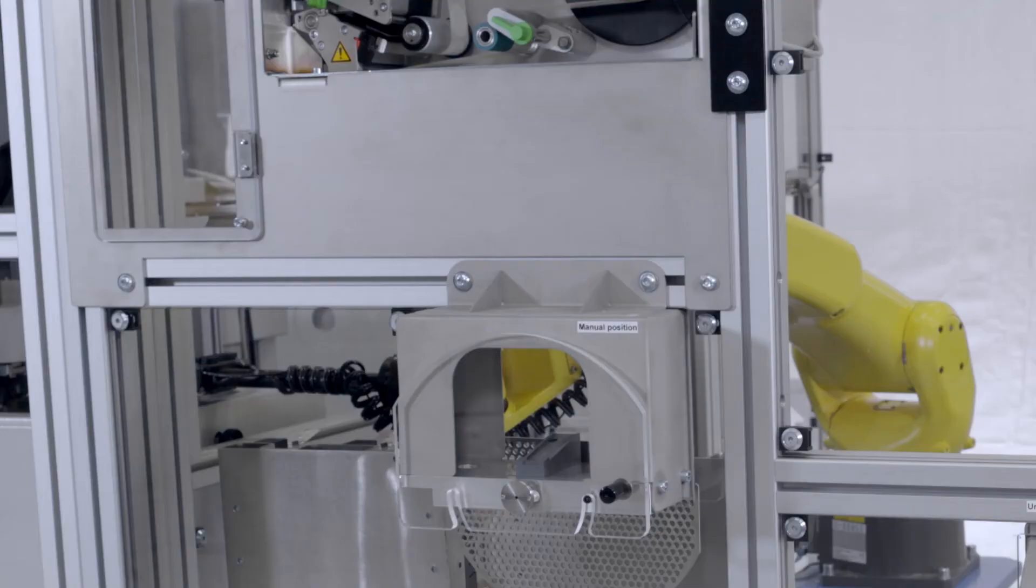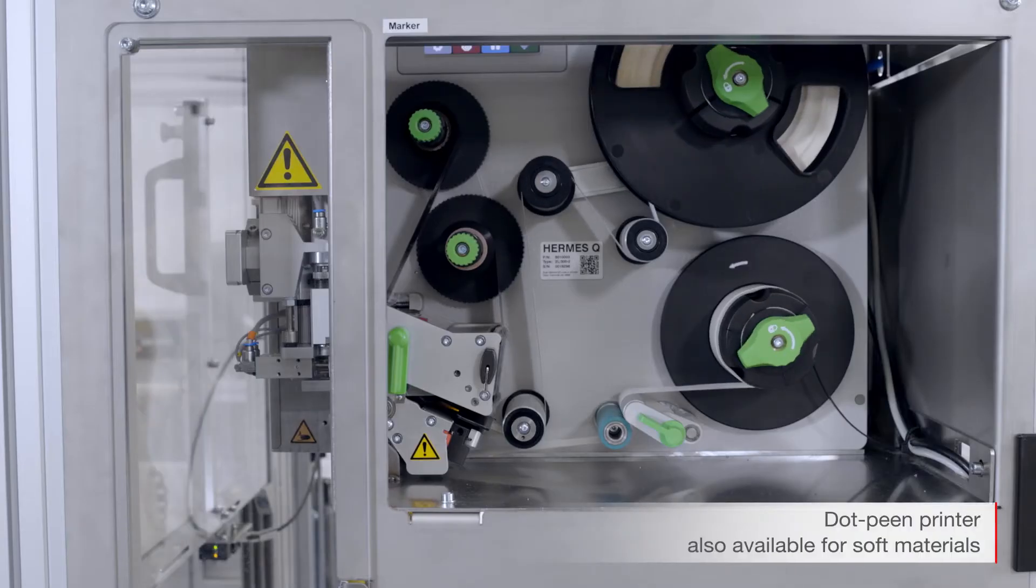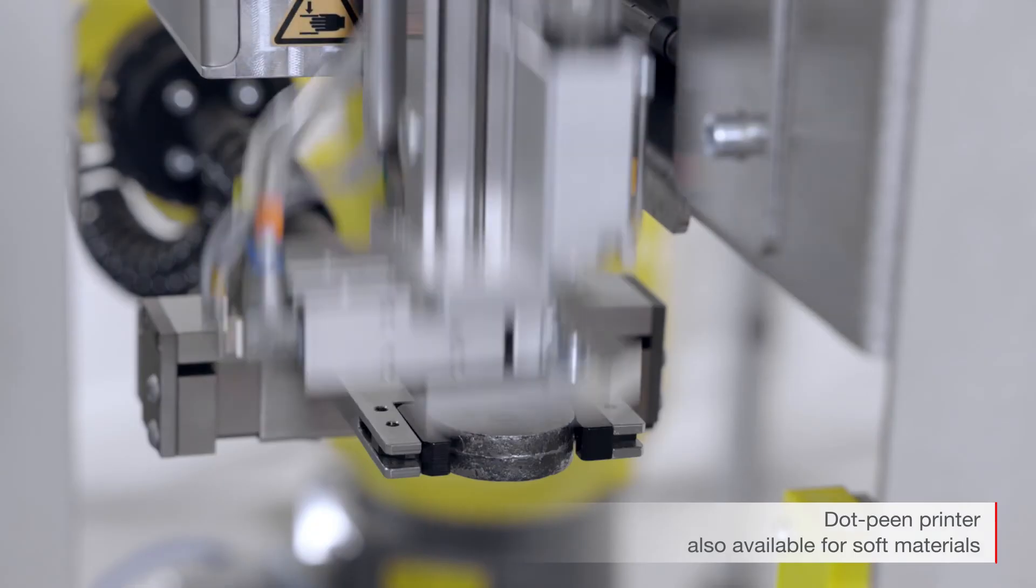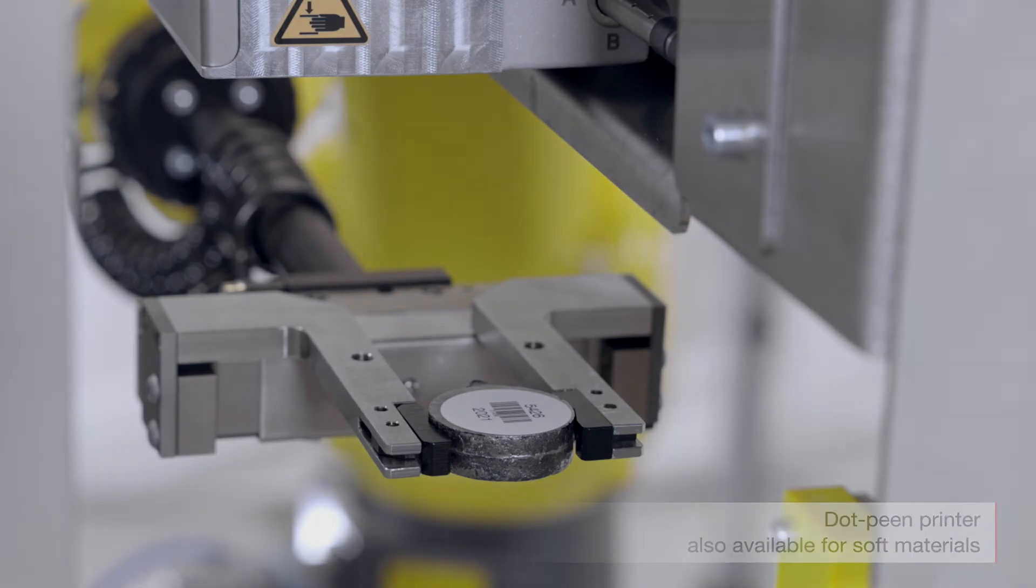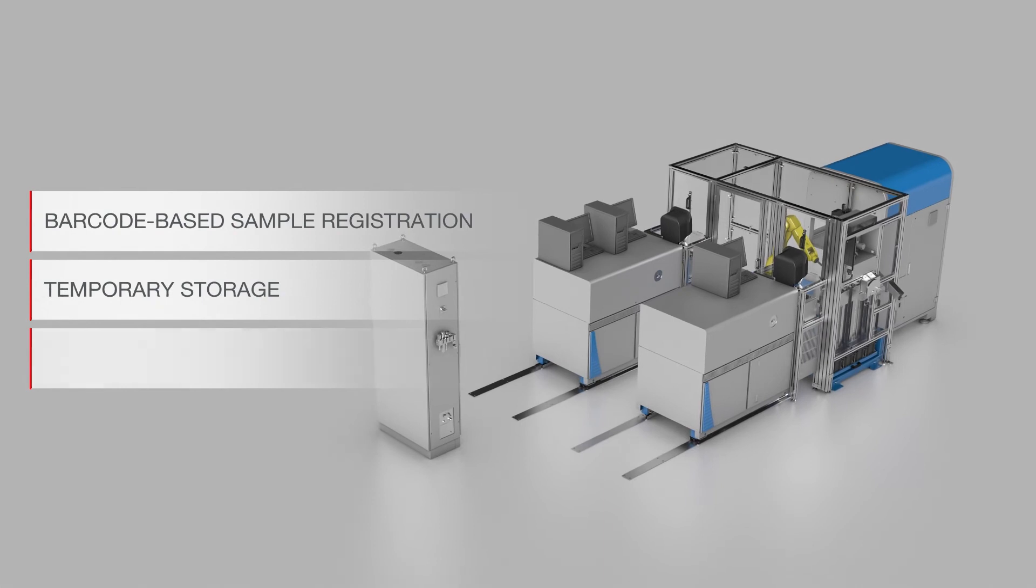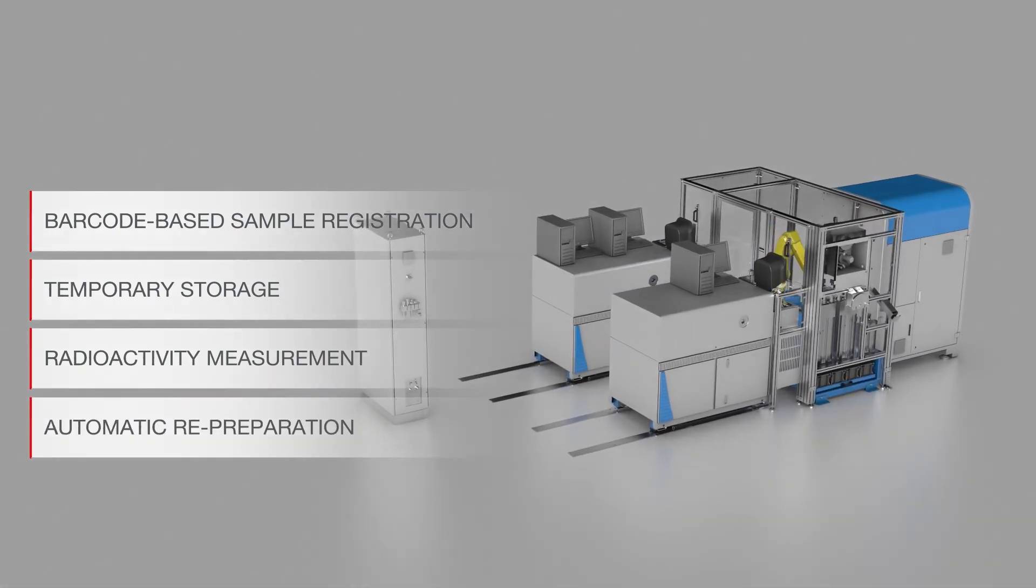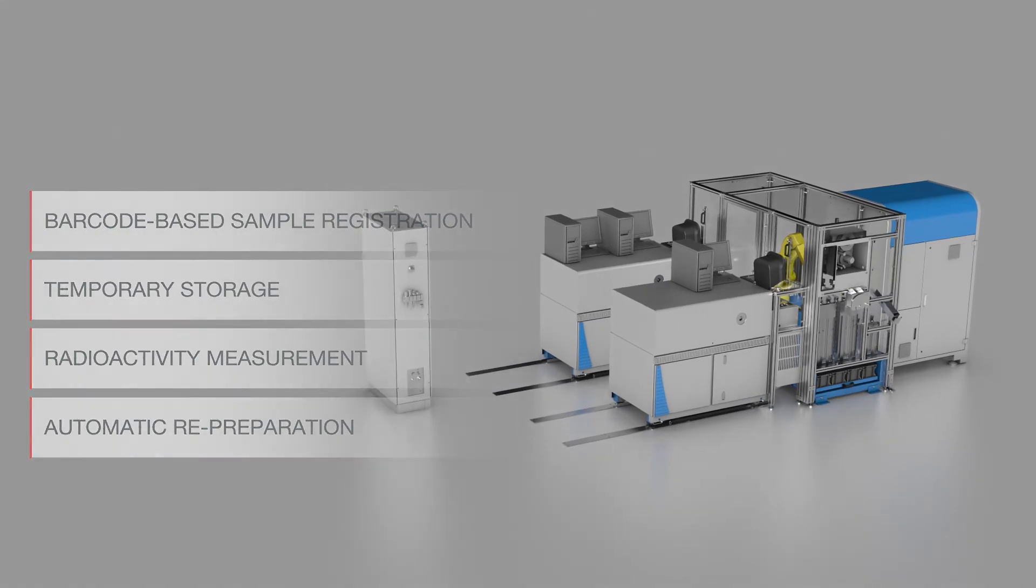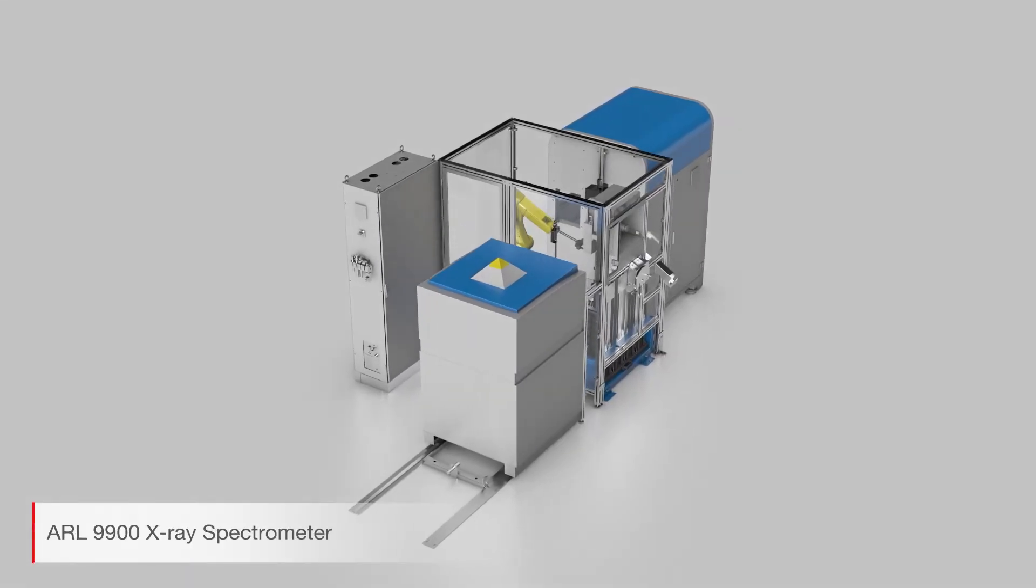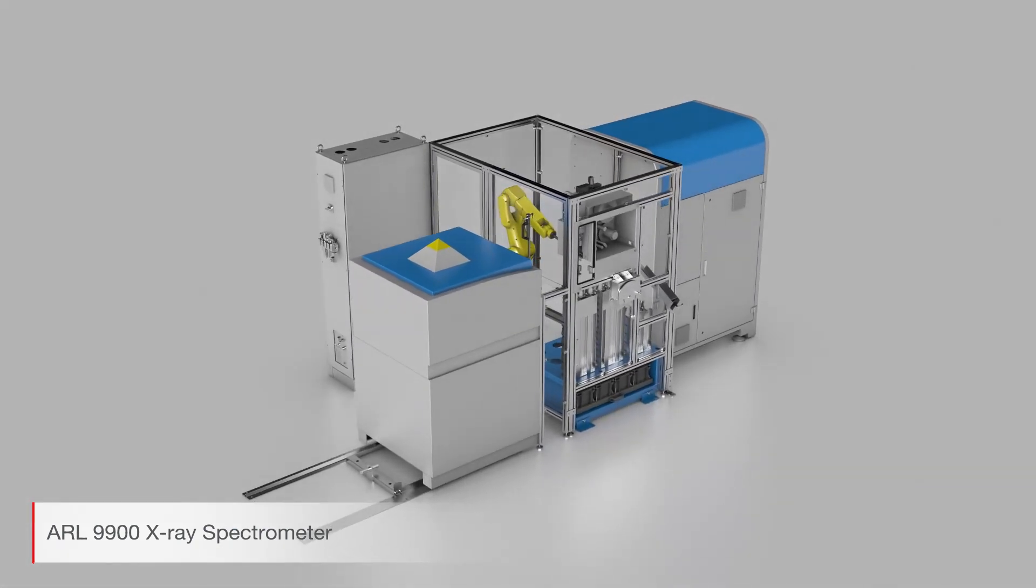The samples can be identified using a label printing system. All the current SMS options are available to satisfy your individual application. The ARL-SMS3300 can also support the ARL-9900 x-ray analyzer for integrated XRF analysis.